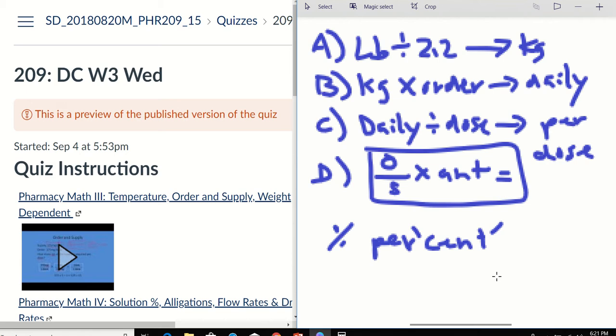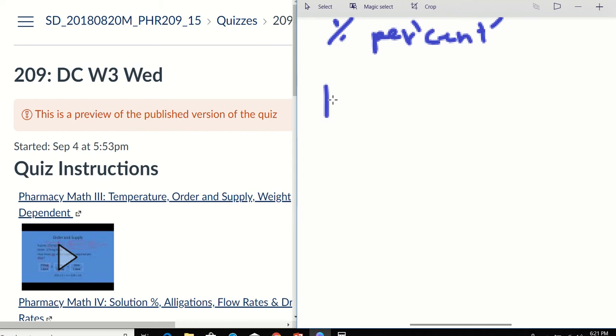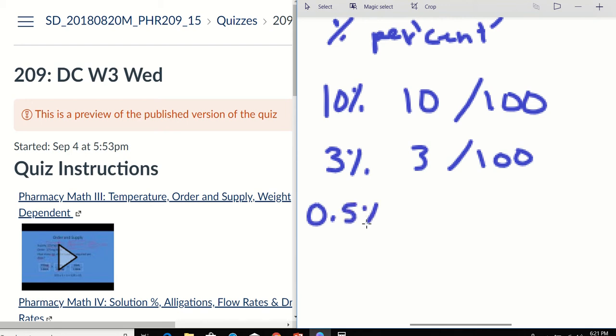So cent means 100. So whenever you have a percentage, for example, 10%, that's going to be 10 per 100. If you have 3%, then that's 3 per 100. If you have 0.5%, then that is 0.5 over 100. But what we're going to put is units. The first units are going to be grams. And the second is going to be mLs. So 10% is 10 grams per 100 mLs. So for us, our units is grams and mLs. 0.5% is 0.5 grams per 100 mLs.